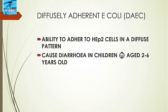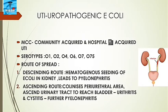Diffusely adherent E. coli (DAEC) has the ability to adhere to human epithelial type 2 cells in a diffuse pattern and causes diarrhea in children aged two to six years. Uropathogenic E. coli (UPEC) causes the most common community-acquired and hospital-acquired urinary tract infections. Serotypes involved are O1, O2, O4, O6, O7, and O75. Routes of spread include ascending and descending routes; in the descending route, hematogenous seeding leads to pyelonephritis.